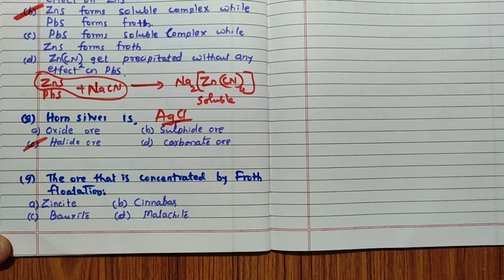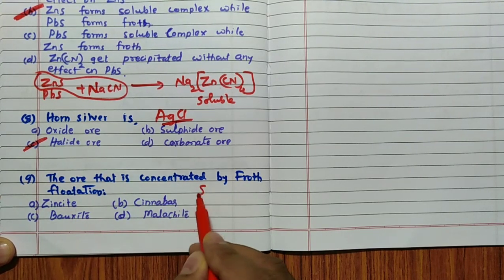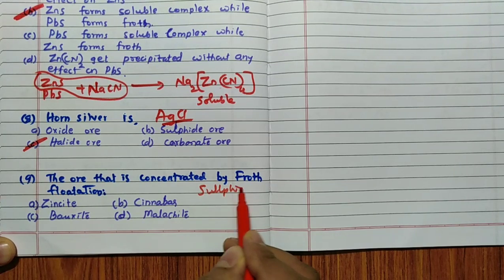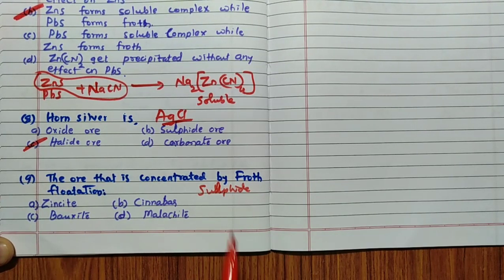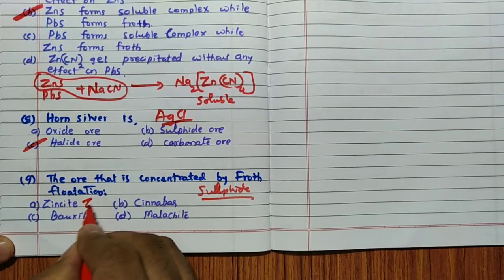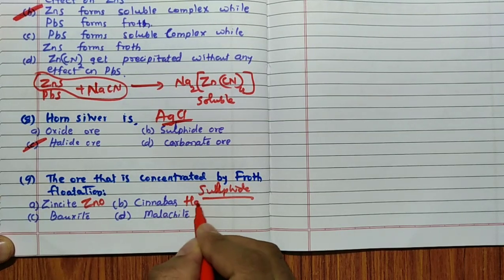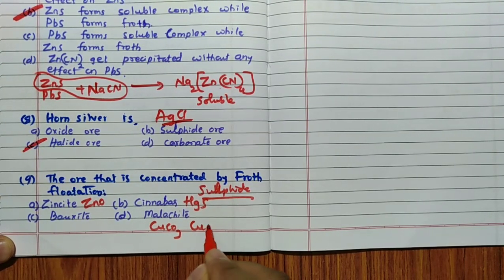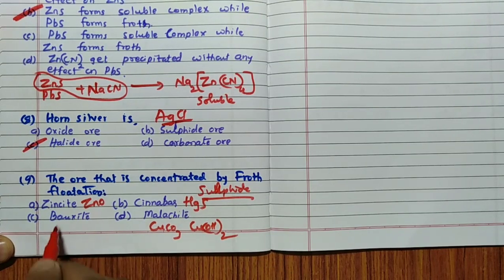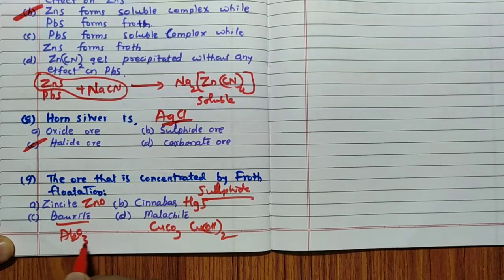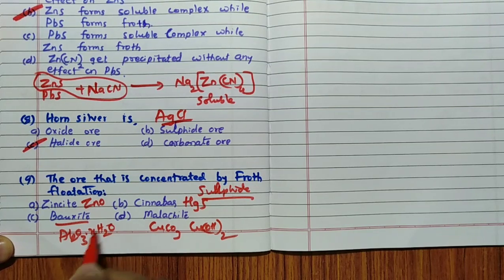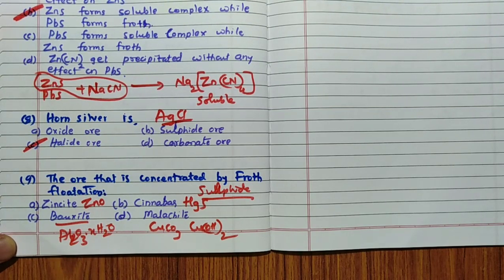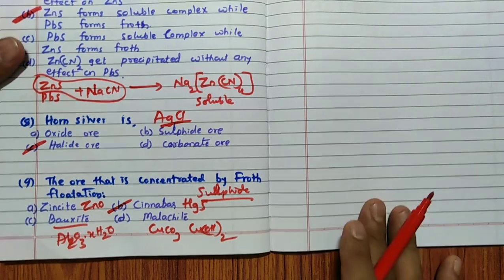The ore that is concentrated by froth flotation. Remember froth flotation concentrated only for sulfide ore. Sulfide ore is which one: zinc oxide is ZnO, cinnabar is HgS sulfide ore, malachite is CuCO3·Cu(OH)2, and bauxite is Al2O3·xH2O. Which is the correct answer in this case? Yes, cinnabar is the correct answer.